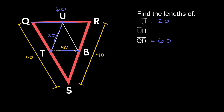Now what about UB? UB is this last mid-segment. Again, just look at the parallel line — the parallel line is equal to 50. So this mid-segment is half of the big one, which means UB is equal to 25.